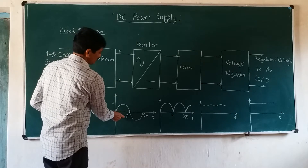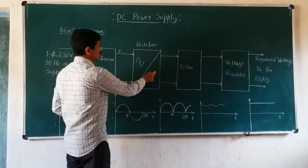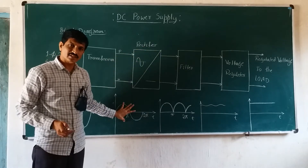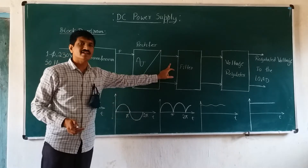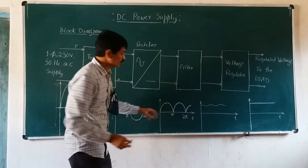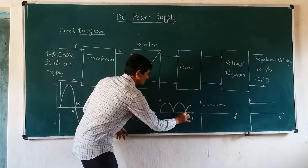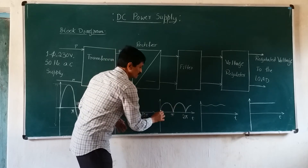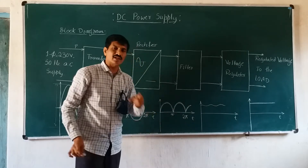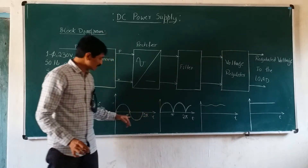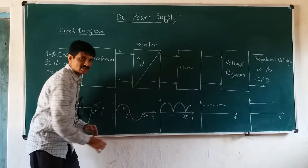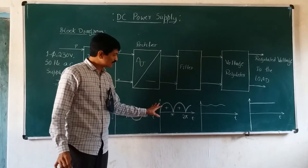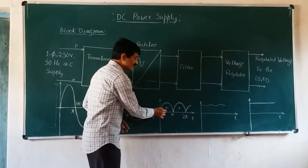This reduced single-phase AC voltage is then input to the next block, which we call the rectifier. The function of the rectifier is to convert the AC voltages into DC voltages. However, the DC voltage obtained is not a pure one — it is pulsating DC, meaning it is unidirectional but not constant. As you can see, the output has continuous variations, but the magnitude varies only in one polarity, having only positive values. This is why we call it pulsating DC.